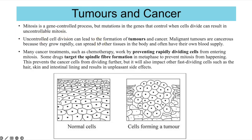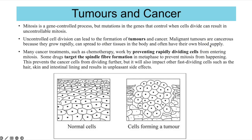If mitosis is happening uncontrollably, new cells are made when the body doesn't need them — that is what a tumour is. Not all tumours are cancerous. Cancerous tumours are called malignant, while non-cancerous ones are benign. Malignant tumours can have cells that break off and spread through the blood or lymphatic system, lodging into new tissues and creating a secondary tumour — a process called metastasis. They can also develop their own blood supply, providing oxygen and glucose for faster aerobic respiration.